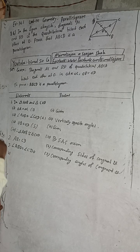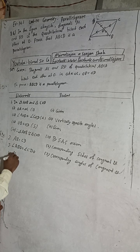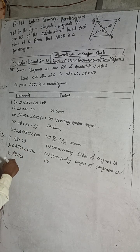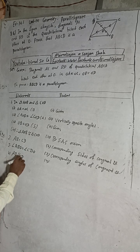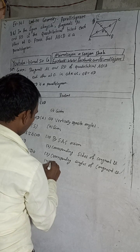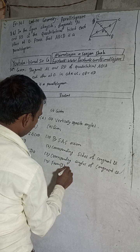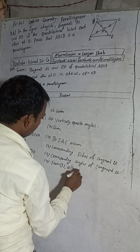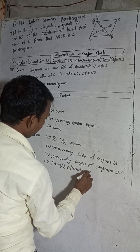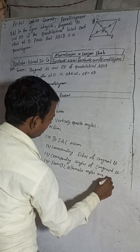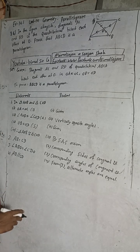Number four: AB is equal to CD, so we can say AB is parallel to CD. Why? Because angle ABO and angle CDO are alternate angles. Alternate angles are equal — from step three. Therefore AB is parallel to CD.